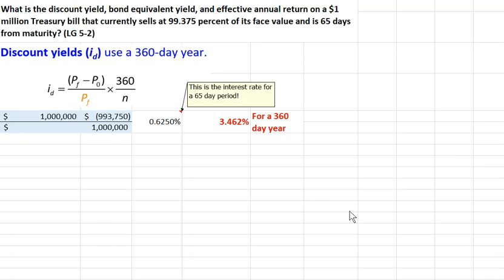We're going to do a quick walkthrough of problem 5-1 that we worked in class today. We're going to calculate the bond discount yield, the bond equivalent yield, and the effective annual return on a $1 million treasury bill currently selling at 99.375% of its face value if it matures in 65 days.